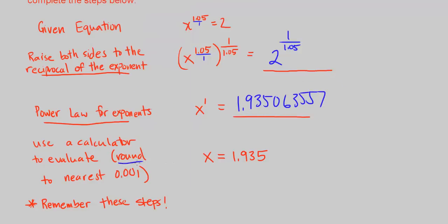And then finally we round to the nearest 0.001. So that's going to cut us off here and we get x is equal to 1.935.